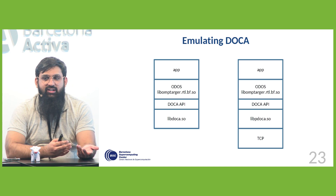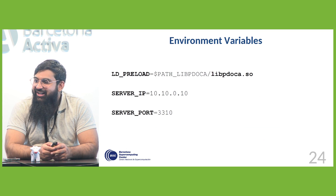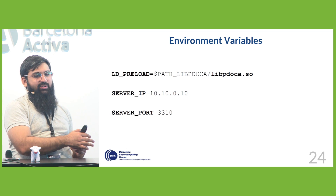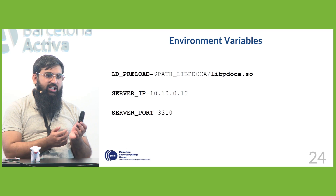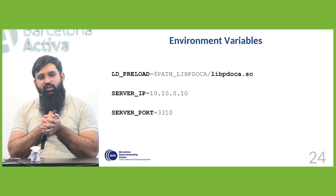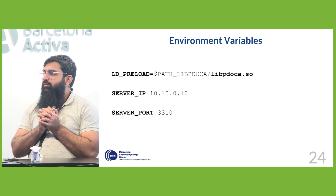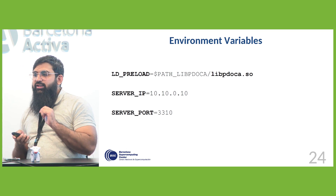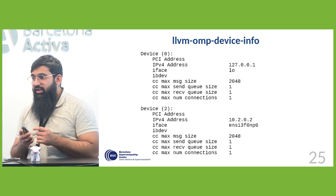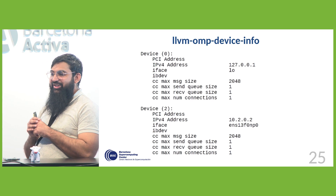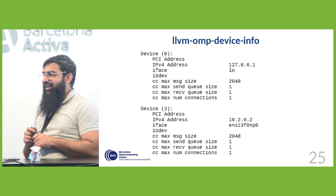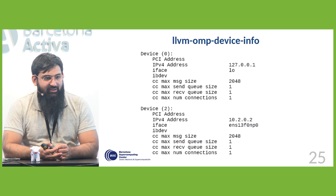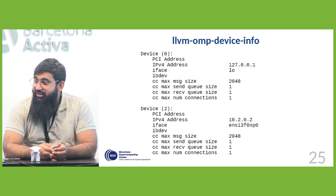This is the stack of the application: there's a shared library which is the primary plugin libomptarget.rtl.bf, and it uses libdoca and some other libraries. We can use pDOCA instead of libdoca but with the same DOCA API, so the framework doesn't change — everything remains the same, just the underlying library changes. It uses TCP to get things done. To get it working we just need a few environment variables: LD_PRELOAD to load the pDOCA library, the server IP, and server port. Running llvm-omp-device-info with those exported shows network devices as DPU accelerators.